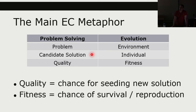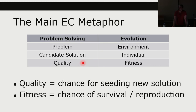A candidate solution to a problem — for example, a path in a pathfinding problem, or a placing of numbers in a Sudoku puzzle — would be represented by an individual in a population in an evolutionary context. I am a potential solution to the problem of life; you are a potential solution to the problem of life. The quality of problem solving — analogous to performance measures — corresponds in the evolutionary context to the fitness of an individual.